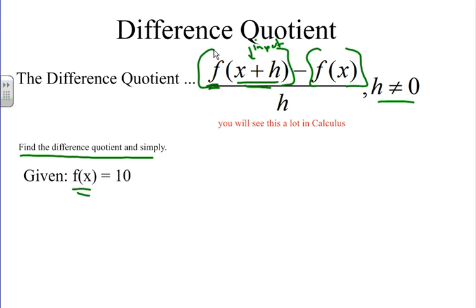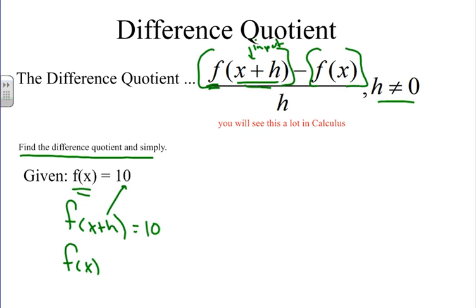Given f of x equals 10, we first need to find f of x plus h and f of x. If we take each individually: f of x plus h means inputting x plus h into function f. If you notice, there is no x — no placeholder. This is a horizontal line, which just gives me 10. Anything I plug into this function gives me 10: I plug in 1, 2, a billion, I get 10. I plug in x plus h, I get 10.